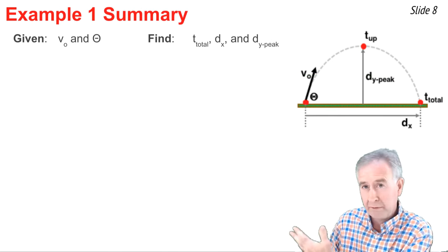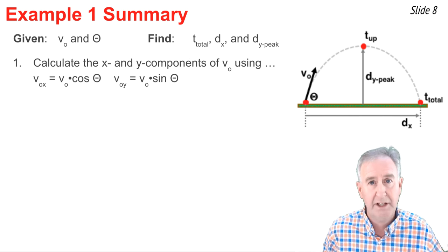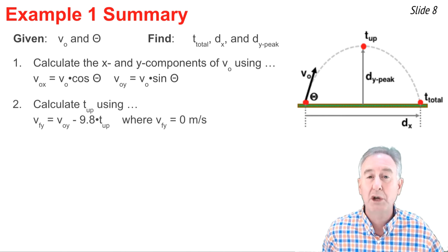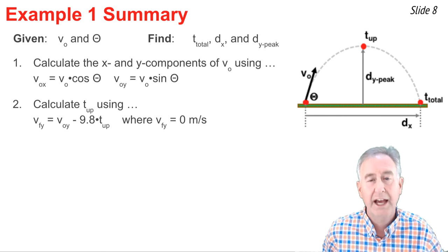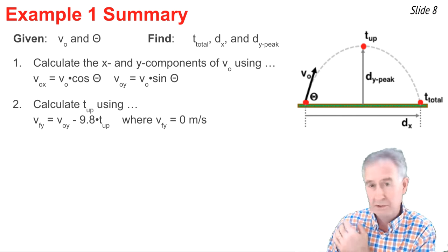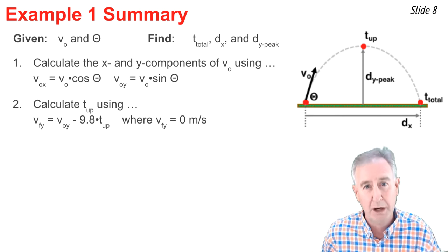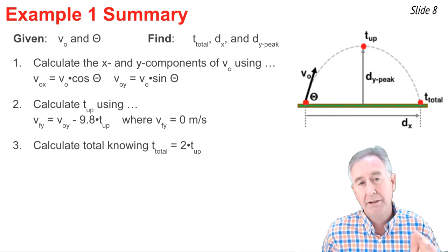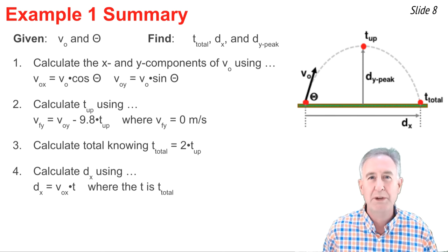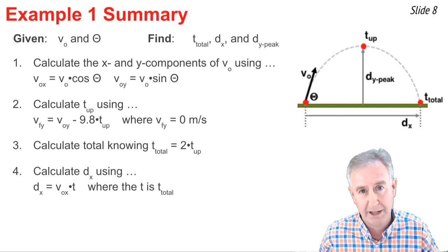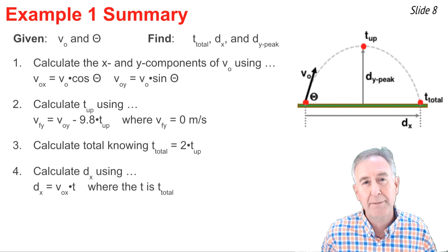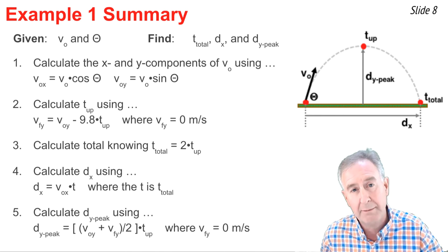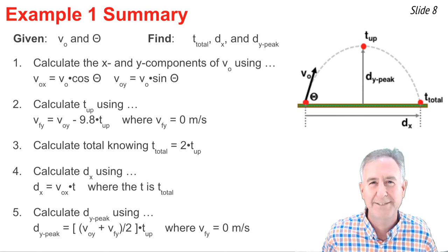Here's a quick summary of how we solved this three-part problem. Step one: take VO and theta and find VOx and VOy using cosine and sine. Step two: determine time to the highest point using vy equals zero at that point. Step three: double that time for the full trajectory. Step four: calculate dx using dx equals VOx times total time. Step five: find peak height using the preferred equation with vy equals zero at time-up, giving final y velocity of zero meters per second.